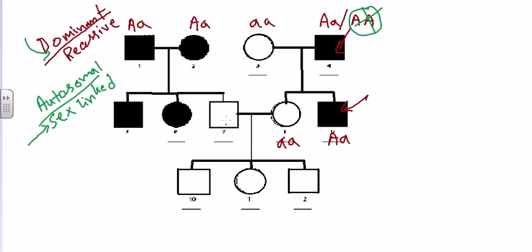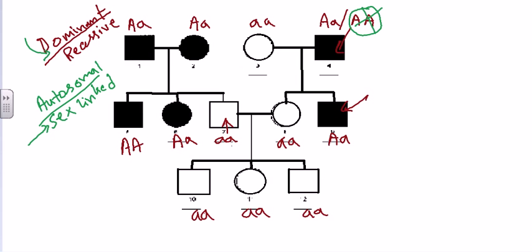Continuing the analysis: an 'Aa' father crossed with an 'aa' mother gives one infected 'Aa' individual and one unaffected 'aa' individual. The two uninfected individuals in the final generation are both 'aa', and when they mate, all offspring receive 'aa' — all uninfected. This is consistent with the pedigree. We can therefore confirm that this pedigree also follows the autosomal dominant trait. That's how you solve pedigree chart problems.